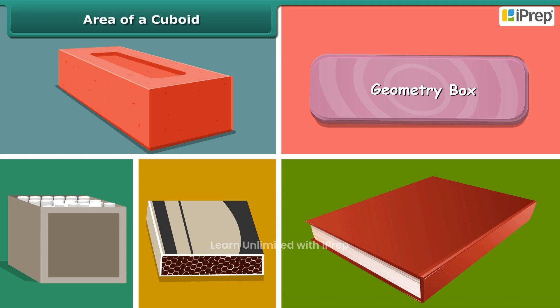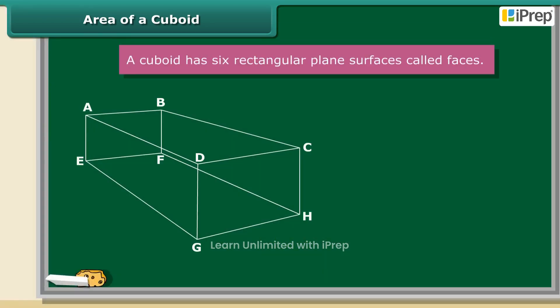A cuboid has six rectangular plane surfaces called faces. So you can say ABCD, ABEF, BCHF are faces of the cuboid.